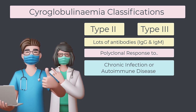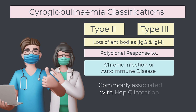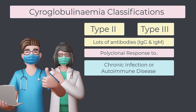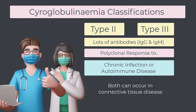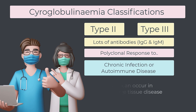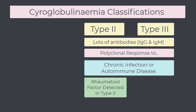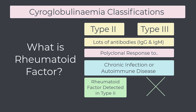Both type two and type three cryoglobulinemia are commonly associated with hepatitis C infection, but can also occur with many other chronic infections. They can both be associated with a variety of connective tissue diseases. The key difference is that type two cryoglobulinemia includes rheumatoid factor and type three does not. That's it — that's the difference between these two things. And that brings us to our last question: what on earth is rheumatoid factor?